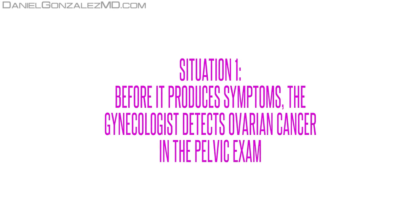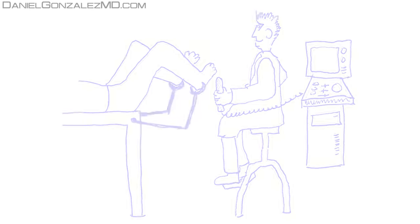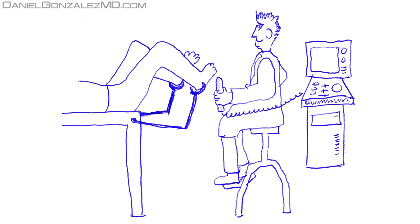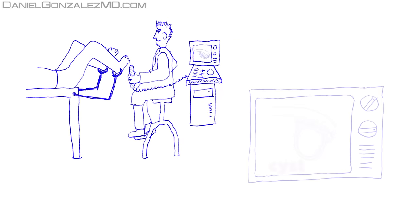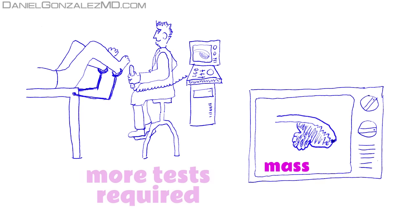Situation 1. Before it produces symptoms, the gynecologist detects ovarian cancer in the pelvic exam. In women who carry out their periodic reviews, ultrasound made by the doctor can determine if their ovaries are healthy. Sometimes large cysts or masses in one of the ovaries are observed, requiring more tests, to eventually diagnose an ovarian cancer.